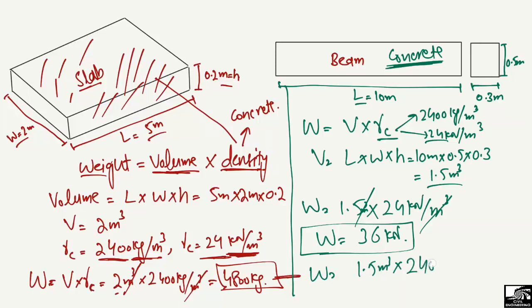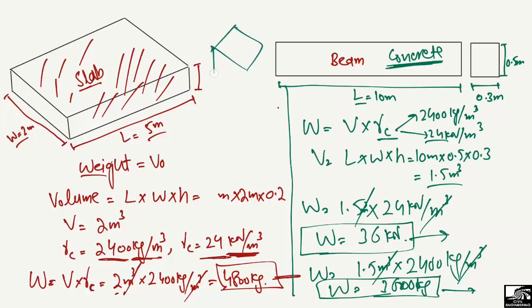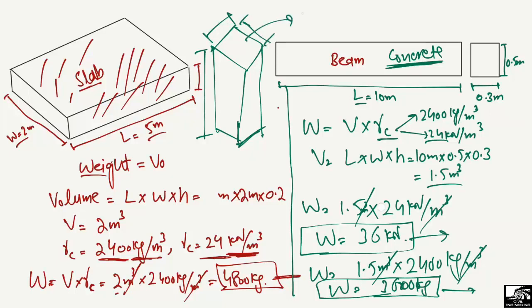Similarly, in kilograms: 1.5 cubic meters multiplied by 2400 kilograms per cubic meter — the cubic meter units cancel — giving 3600 kilograms as the weight of the beam. These are two different ways to find the weight of structural members. For a column, you would need the length, width, and the other dimension or thickness of the column to find its volume.